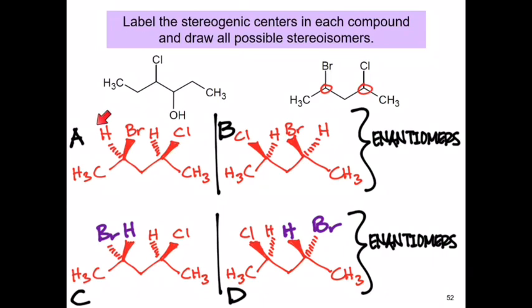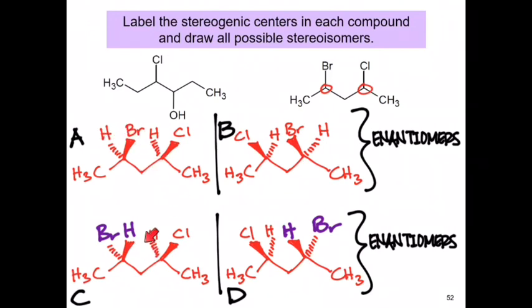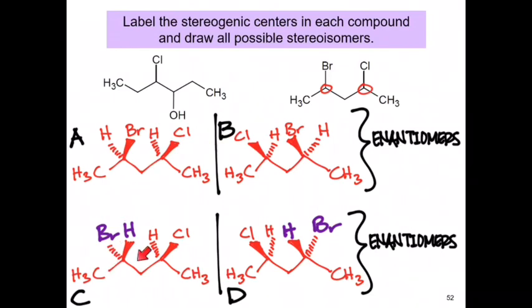So now we have a total of four stereoisomers: a pair of enantiomers A and B, and another pair of enantiomers C and D. A and C are completely different compounds and are considered diastereomers because they are non-mirror images and non-superimposable. B and D are diastereomers in the same way. In other words, A and B are diastereomers of C and D.